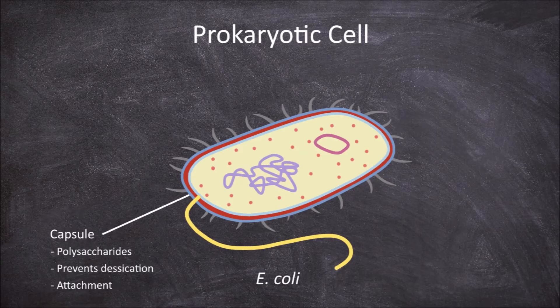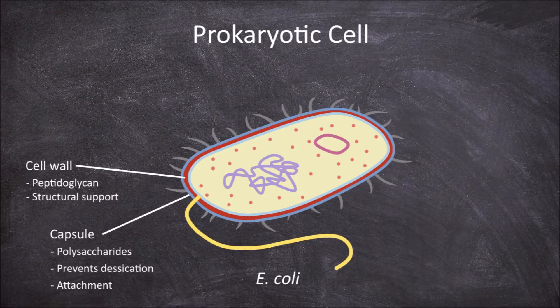Inward from this they may have a cell wall. This cell wall is rigid and made of peptidoglycan. The function of the cell wall is to provide structural support by maintaining the shape of the cell and also to prevent it from bursting from turgor pressure.